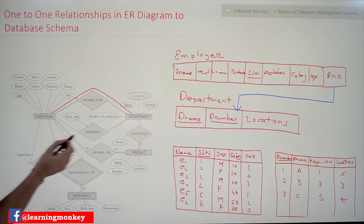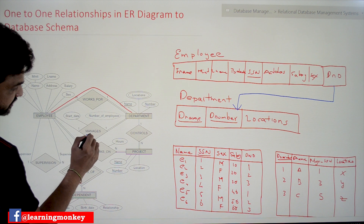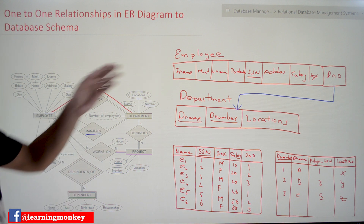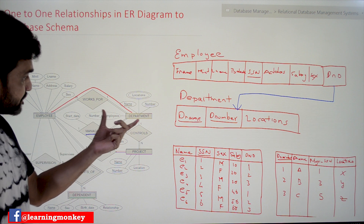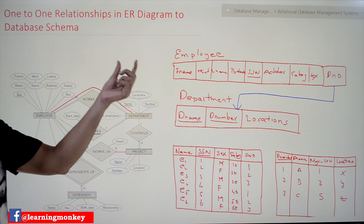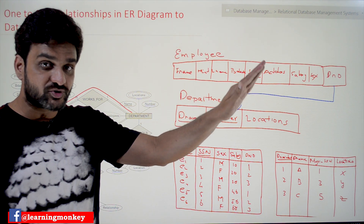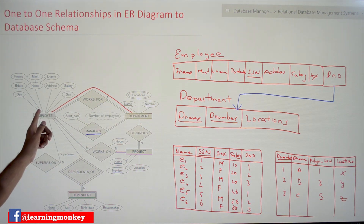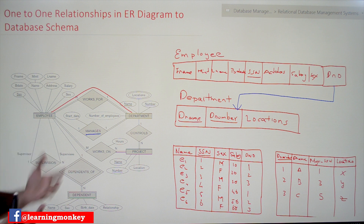Now coming to this class, we'll try to understand this relationship 'manages.' This is a one-to-one relationship, and we will try to understand how this relationship gets converted into the database schema. This relationship is established in the ER diagram from the attribute called 'manager.' Whenever an attribute of an entity type represents the attribute of another entity type, it gets converted into a relationship — which we have already covered.